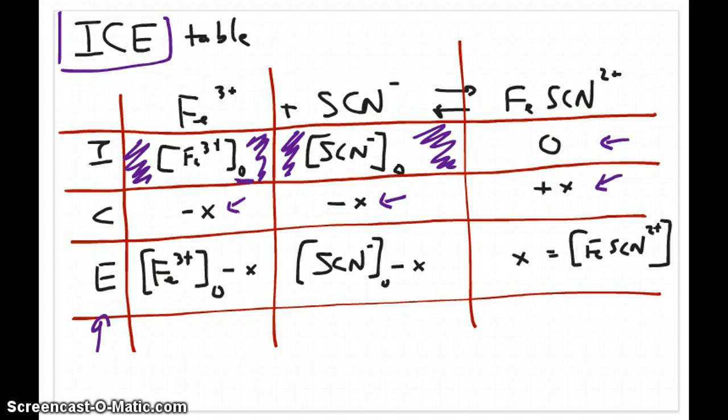So at equilibrium, what you have is you just add the rows of initial and change. So you get this being the equilibrium concentration: [Fe³⁺]₀ minus X for iron, and then this would be for thiocyanate. And of course for FeSCN²⁺, the complex ion, you just have X, which in this case would be [FeSCN²⁺].